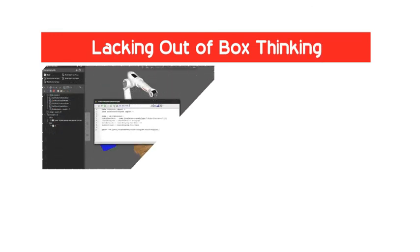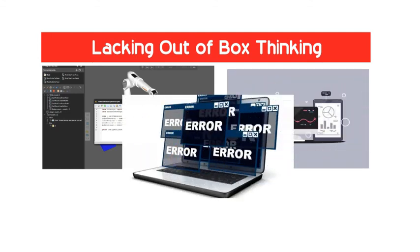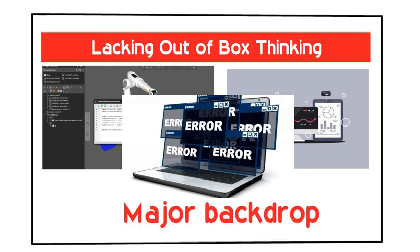5. Lacking Out of Box Thinking. Machines can perform only those tasks which they are designed or programmed to do. Anything out of that, they tend to crash or give irrelevant outputs which could be a major backdrop.